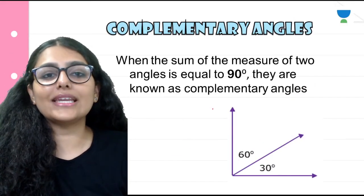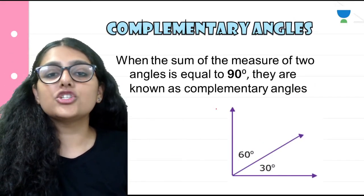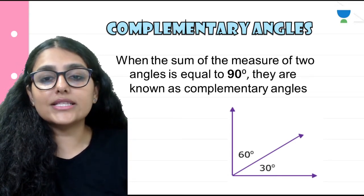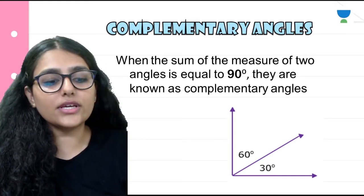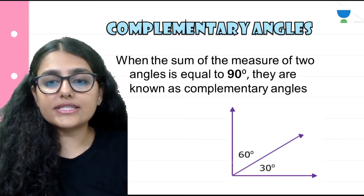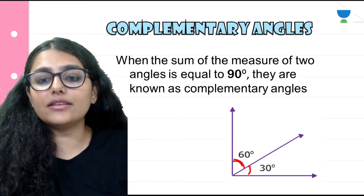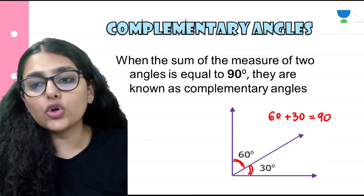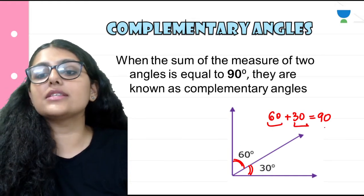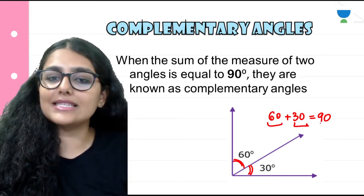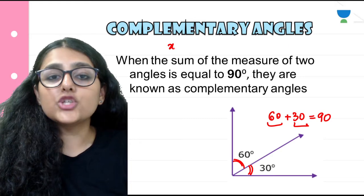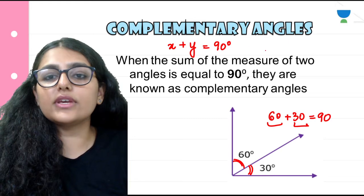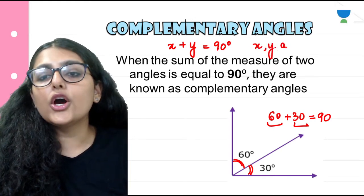First one is complementary angles. What are complementary angles? When the sum of the measure of two angles is equal to 90 degrees, they are known as complementary angles. For example, 60 and 30: 60 plus 30 equals 90 degrees. So if we have any two angles, say x and y, and x plus y is equal to 90 degrees, then we can say that x and y are complementary.